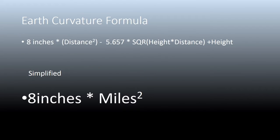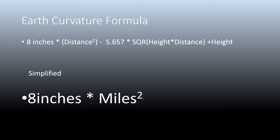The Earth curvature formula is simplified to 8 inches per mile squared. If the Earth is truly 25,000 miles in circumference, we should be able to see that drop-off of curvature as we look over a known horizon.